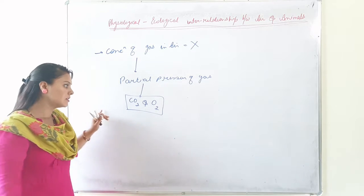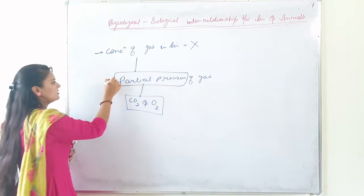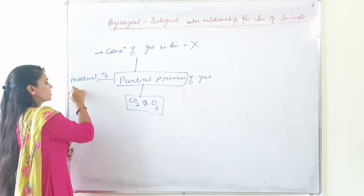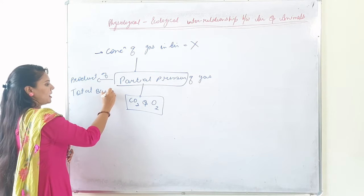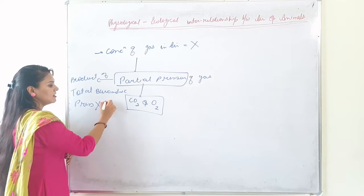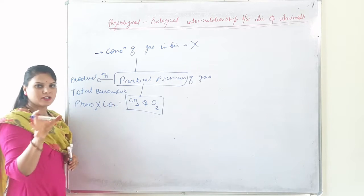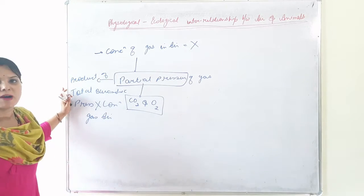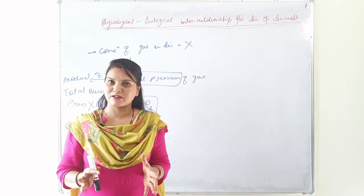So what is partial pressure? Partial pressure is the product of total barometric pressure and concentration of a particular gas present in air. Air is a mixture of gases.